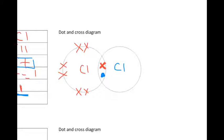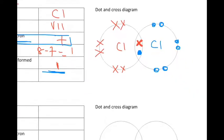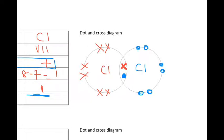And chlorine blue should have 7 electrons of its own. So 1 already here, 2, 3, 4, 5, 6, and 7. So each chlorine has its own number of outermost electrons. This is the dot and cross diagram for Cl2.